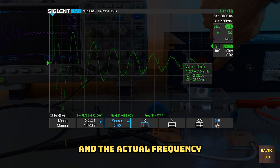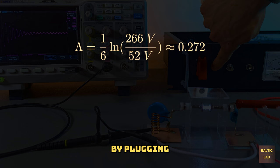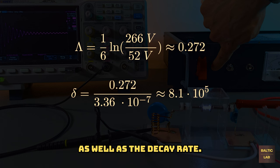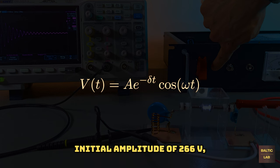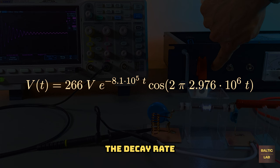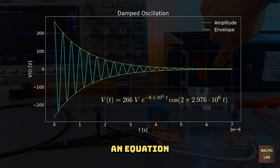The cycle duration and the actual frequency of oscillation can also be read directly from the oscilloscope screen. By plugging those measurements into the equations we can now calculate the logarithmic decrement as well as the decay rate. Plugging the initial amplitude of 266 volts, the decay rate we just calculated, as well as the measured frequency into the equation, yields an equation that mathematically expresses the output of the spark gap transmitter.